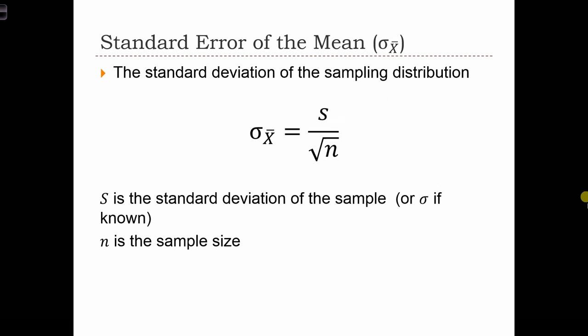The standard error of the mean can be thought of as the standard deviation of the sampling distribution. And we've calculated it as the standard deviation of the sample divided by the square root of the sample size. In the rare case when sigma is known, instead of dividing s by root n, we divide sigma by root n. And we can calculate the standard error of the mean with this formula only in the cases when sigma is known.